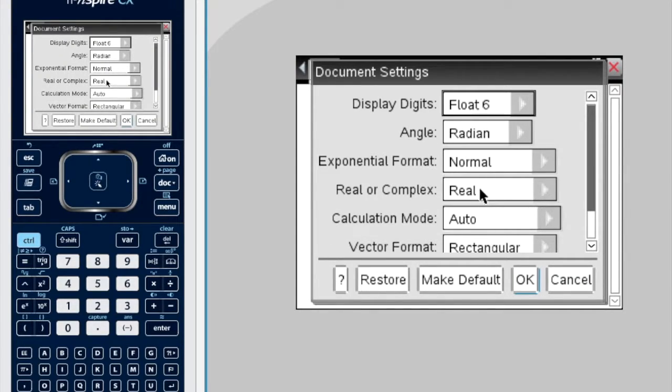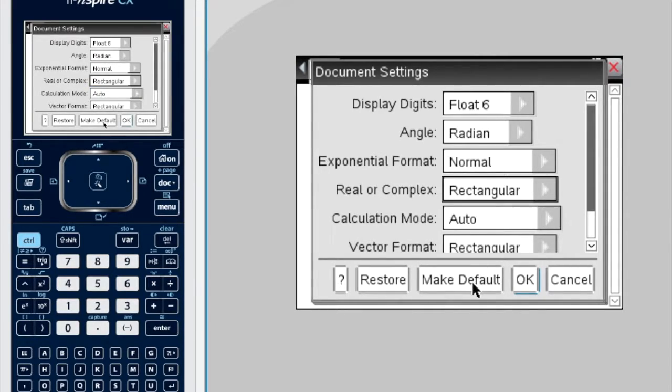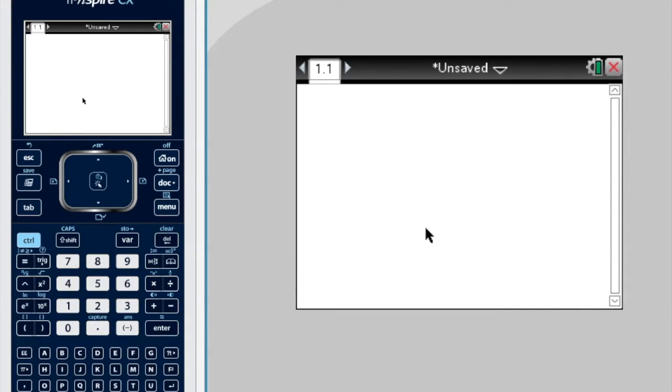It says real or complex here. First, we're going to work with rectangular complex numbers, which is in the form a plus ib. So we'll choose rectangular and make default so that it stays that way.